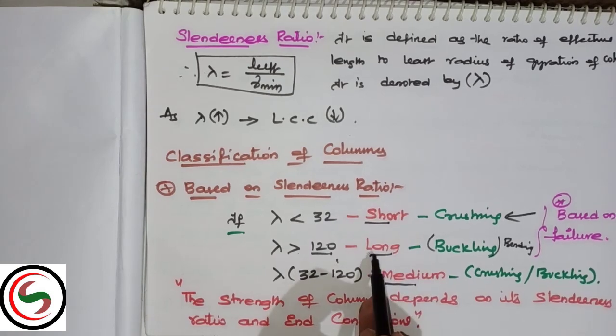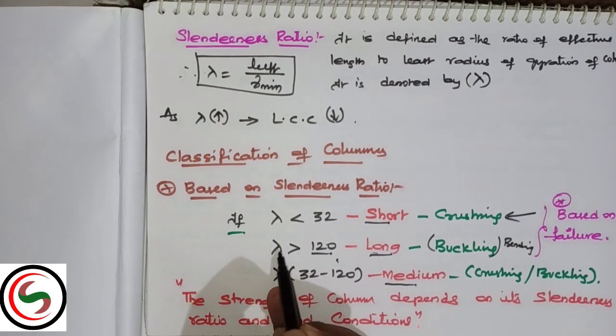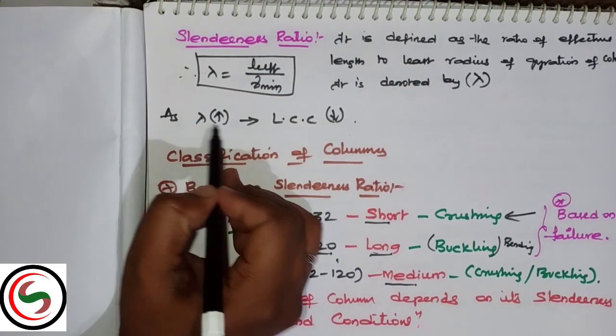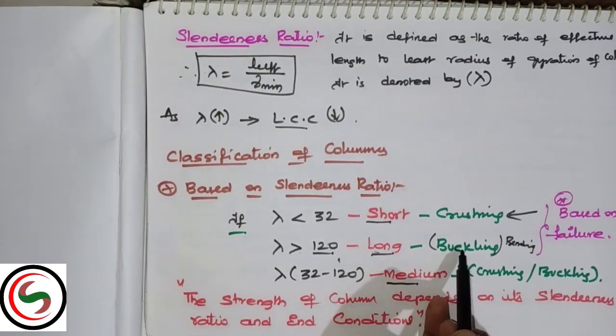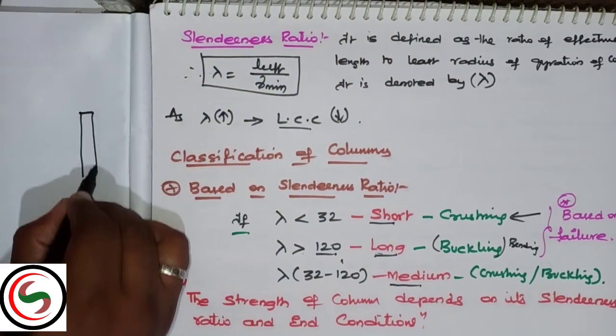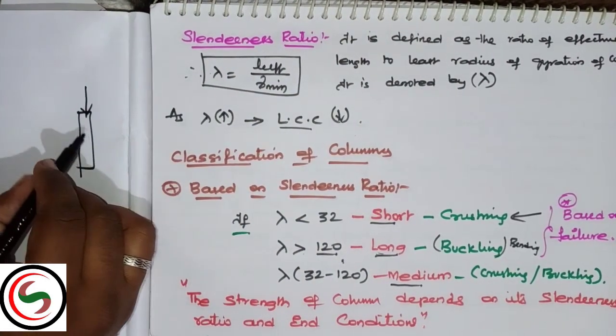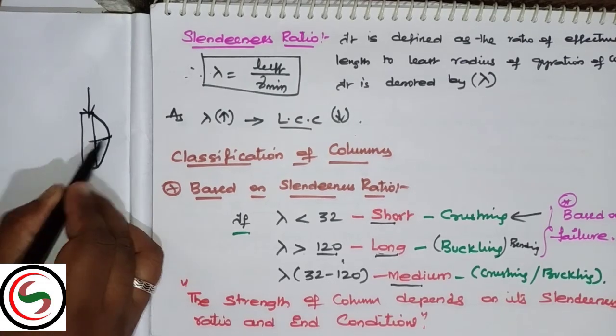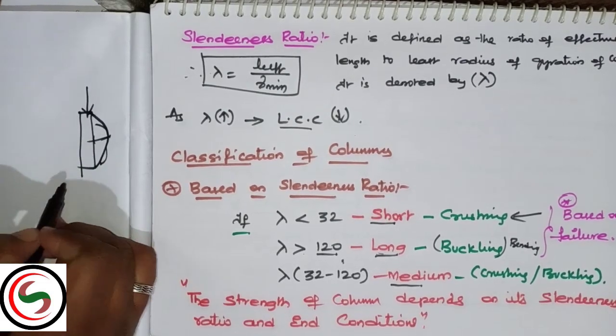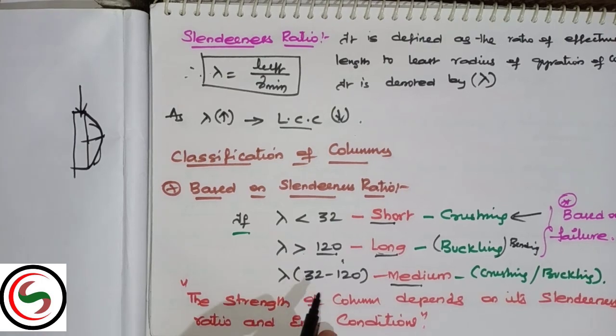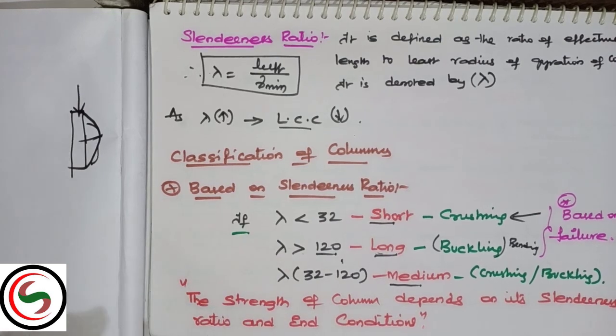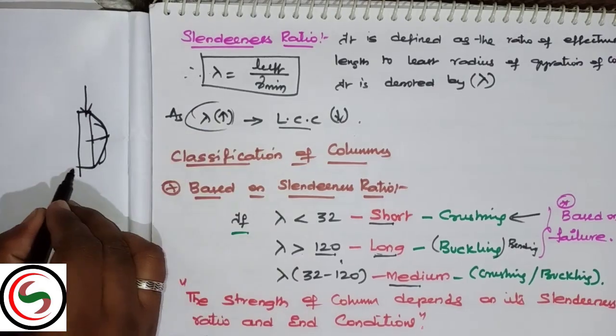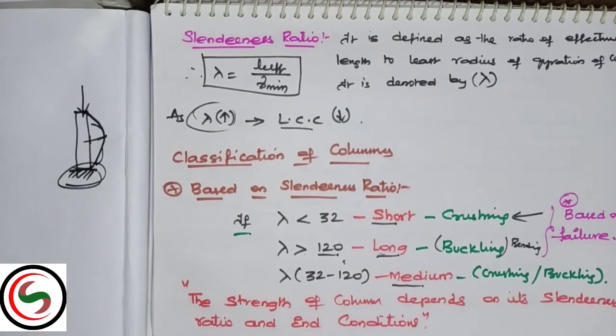Next, classification based upon failure: short columns fail by crushing, long columns fail by buckling, which is called bending failure. The strength of the column depends upon the slenderness ratio and end conditions.